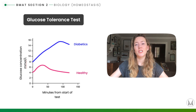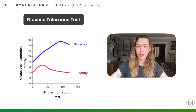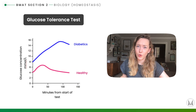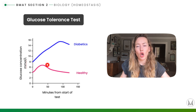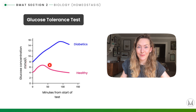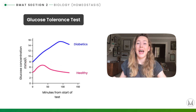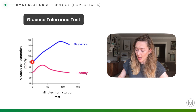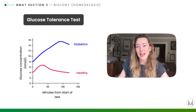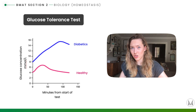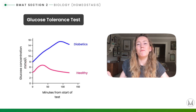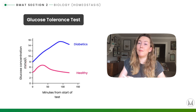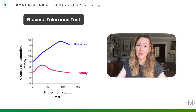In the glucose tolerance test, a person is given a glucose drink and their blood glucose levels are monitored over several hours. In a healthy individual, blood glucose levels will rise but then homeostasis kicks in — the pancreas secretes insulin, which stores the excess glucose as glycogen, reducing blood glucose levels. In an individual with diabetes, blood glucose levels increase but either there isn't the insulin to convert glucose to glycogen (type 1) or there is less sensitivity to insulin (type 2), so blood glucose levels remain high, leading to hyperglycemia if untreated.